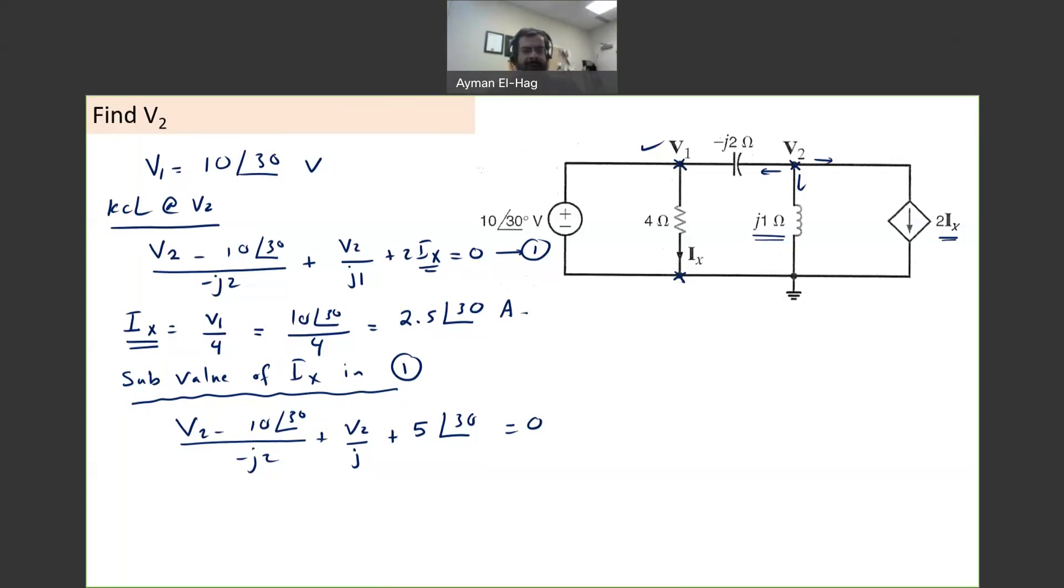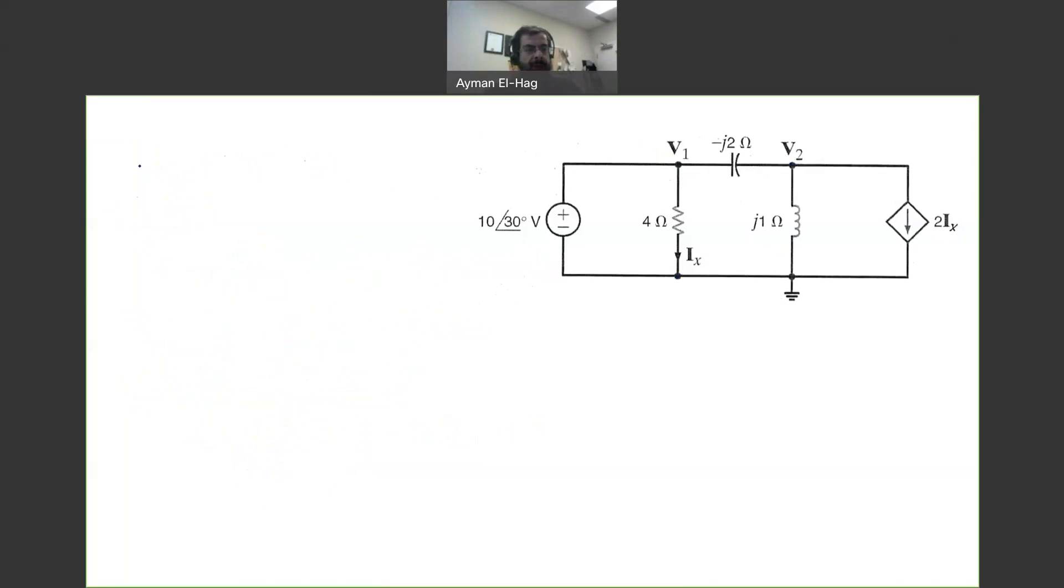So we'll start with the first term. V2 minus 10∠30° divided by -j2. So this is the first term in the equation. Now, we don't want at all to see in that denominator either imaginary number or a complex number. What's the difference between the two? A complex number is in the form A + jB. An imaginary number is only jB. So I don't want to see j at all in the denominator.